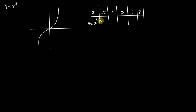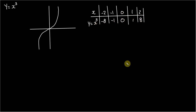Substituting these values: negative 2 cubed is negative 8, negative 1 cubed is negative 1, 0 cubed is 0, 1 cubed is 1, and 2 cubed is 8. So for this function, it crosses at the point (1, 1), at (2, 8), and so on.